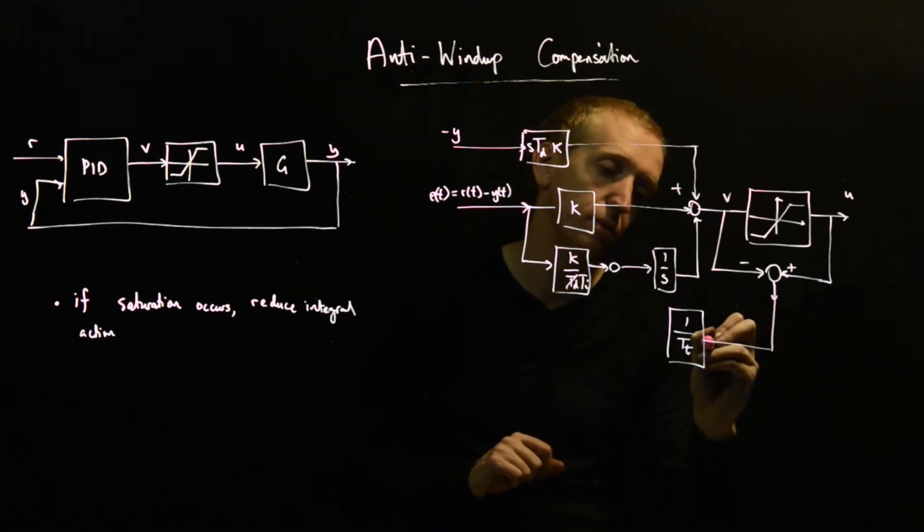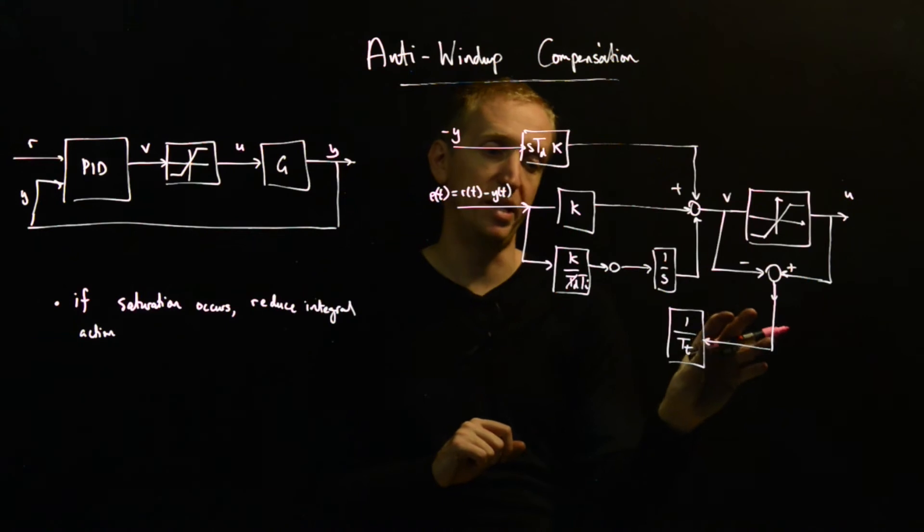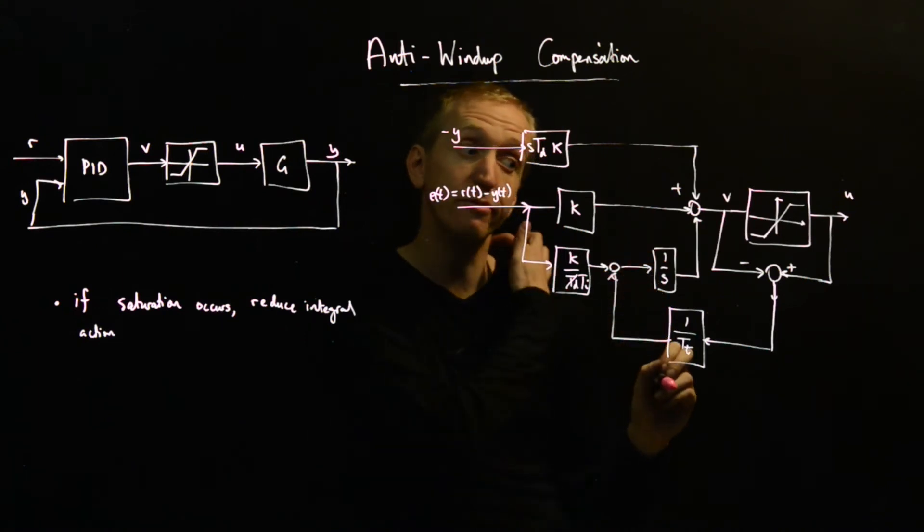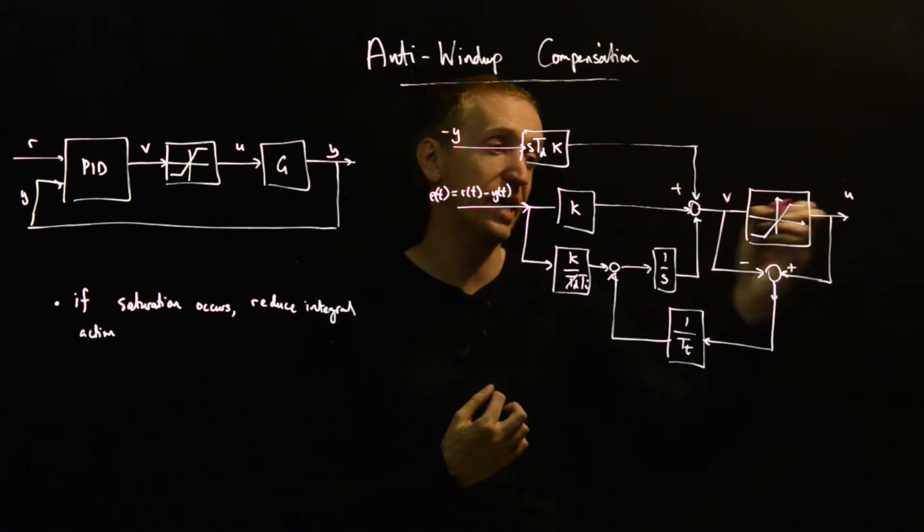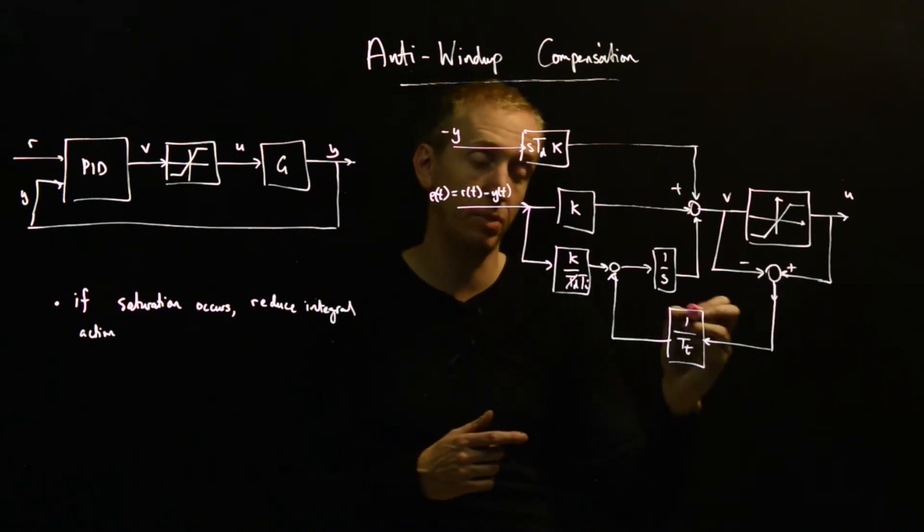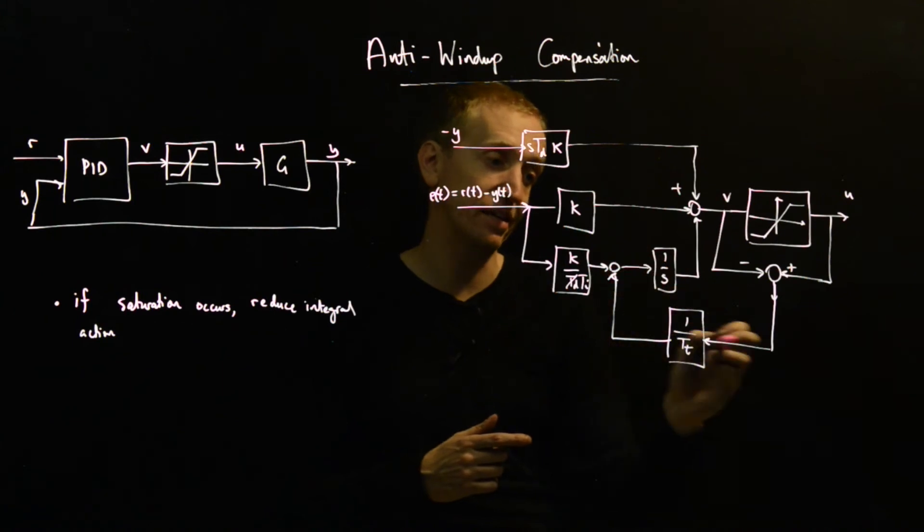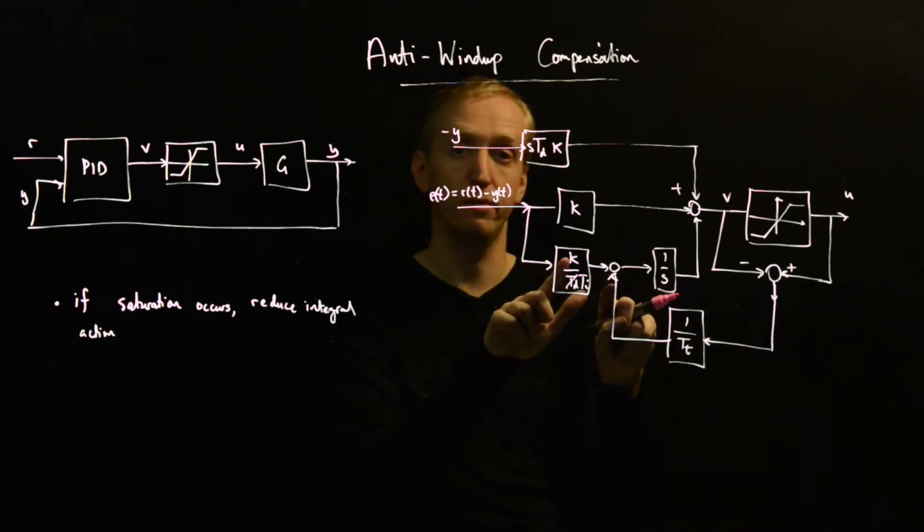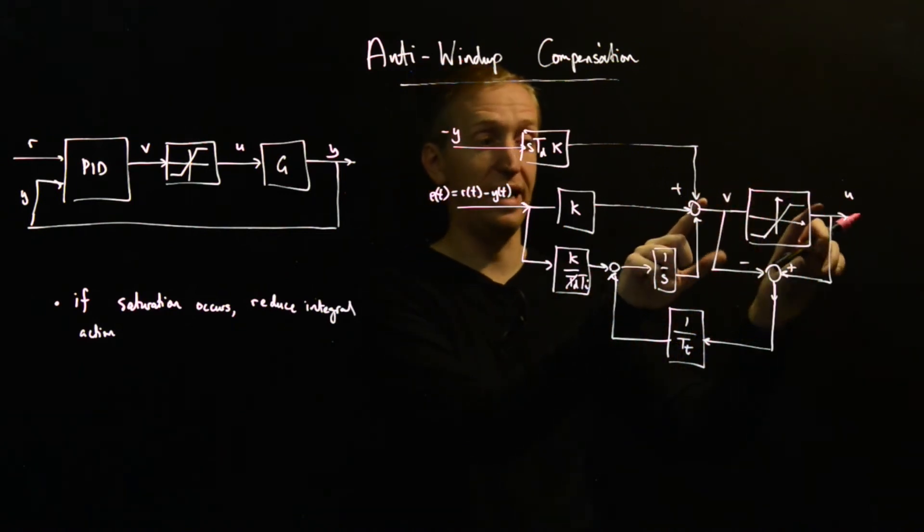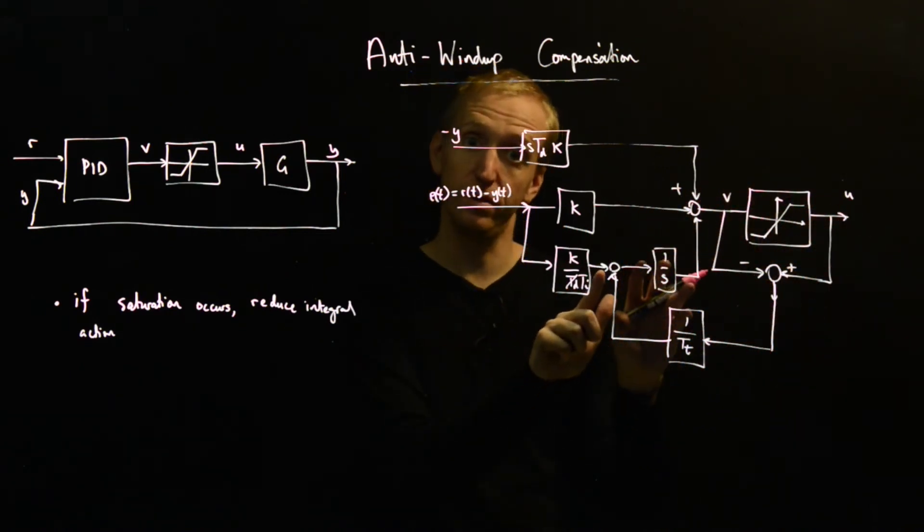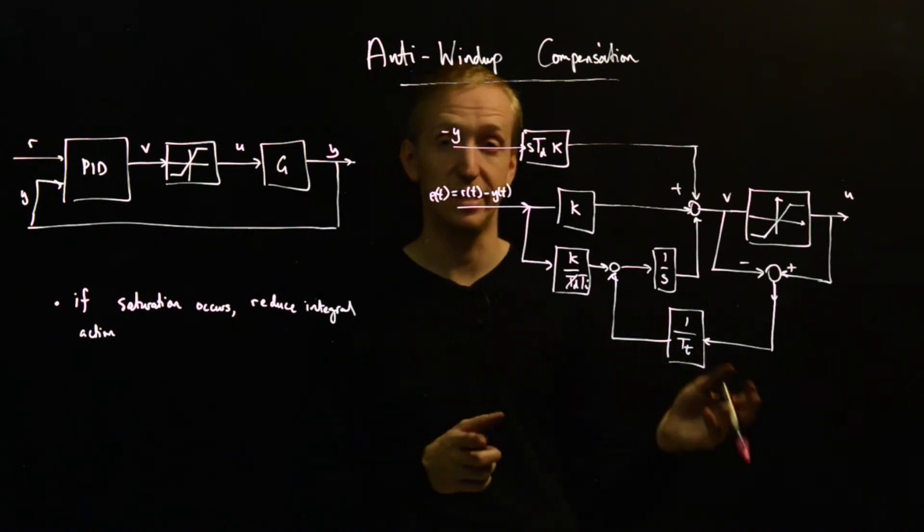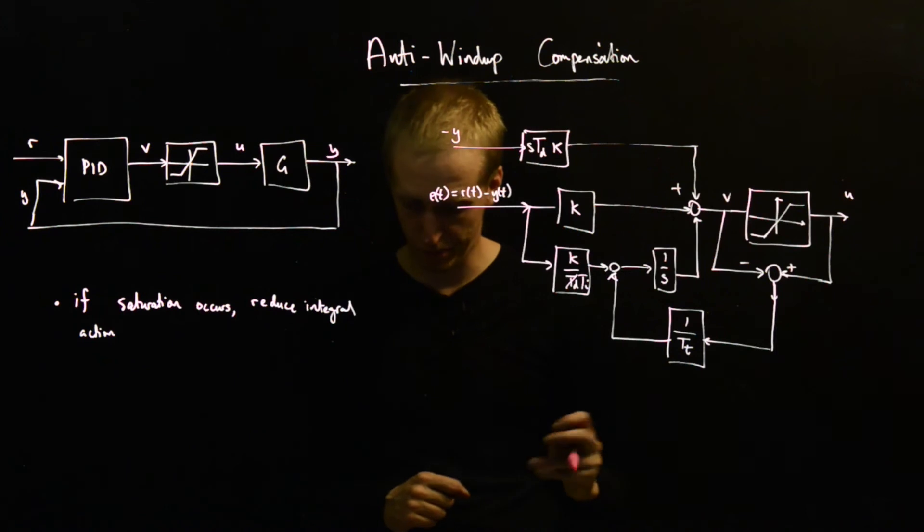And so what we do is we take this signal here that is big if we're saturating. It's big and negative because the thing that we're asking for more than we get. So this will be big and negative if we're saturating on the upper branch. We take this signal, we scale it by our new design parameter, and then we just add it in here. So if this is negative, then the effect is going to be to reduce the signal that we're integrating. And this is how the anti-wind-up scheme works. So whenever we have a saturation, we start to reduce the amount of the signal, reduce the size of the signal that we're integrating. And that will have the effect of preventing things from winding up. So this is our anti-wind-up compensation.